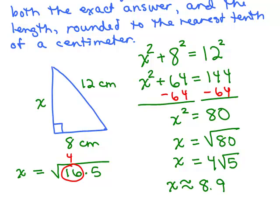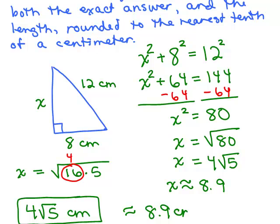So it's approximately 8.9. Notice I just did the square root of 80. I could have done the square root of 5 and then multiply it by 4, but it was easier just to put in the 80 and the square root. What's the exact answer? We would say 4 square roots of 5 centimeters. That's the exact answer.